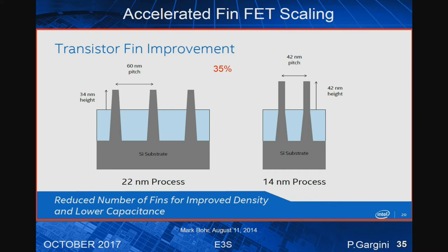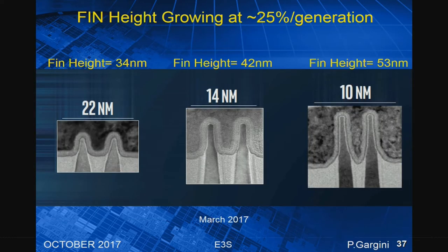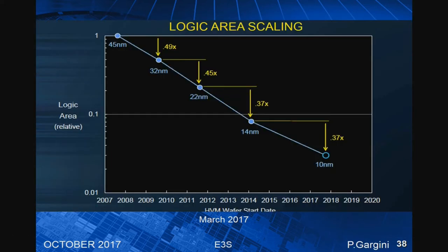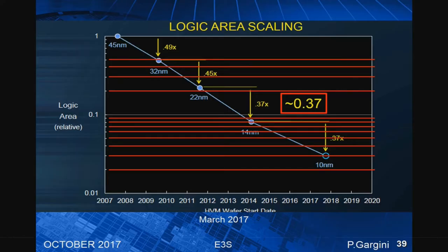You can see the fin went from 34 to 42 nanometers. Give me a data point, I'll have a range; give me two points, I'll have a trend; give me a third point and it's a fundamental law of physics. Mark came out in March: 34, 42, 53 — basic math, 25% per generation — I know the universe. The advent of FinFET improved compaction precisely by playing with the fins. The key number is 0.37 — the next device is about 30% of the previous one. But in the SRAM cell it's 0.59, so you understand there is a problem.